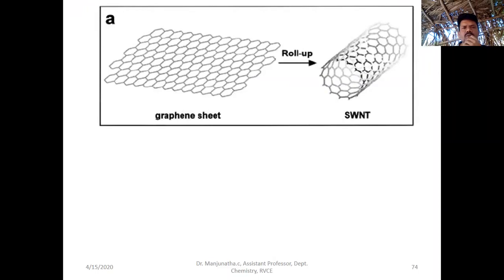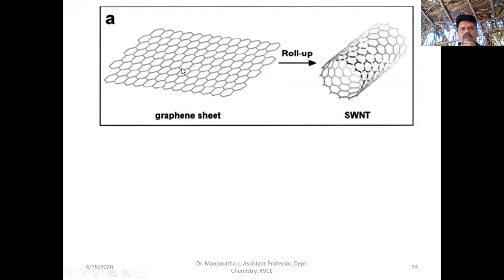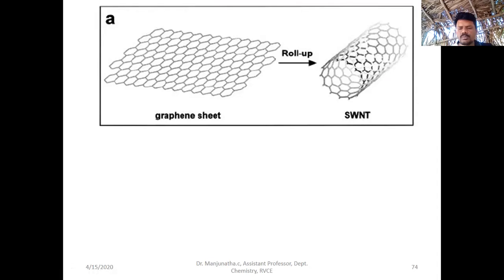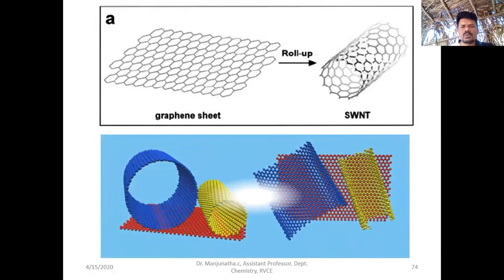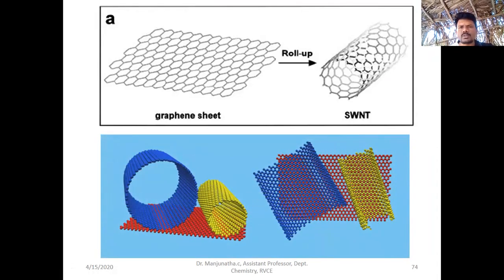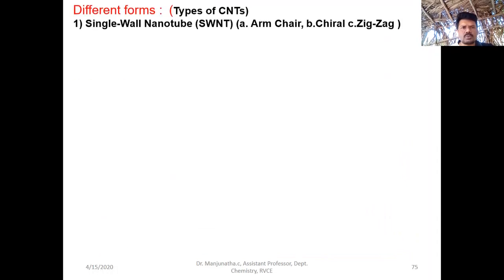This is the slide showing the first one. This one is a graphene sheet — a two-dimensional sheet. If you roll that sheet in the form of a cylindrical tube, we call it a carbon nanotube. So if it is made up of one graphene sheet, we call it a single-walled carbon nanotube. If it is made up of two to three graphene sheets, then we call the tube a multi-walled carbon nanotube.